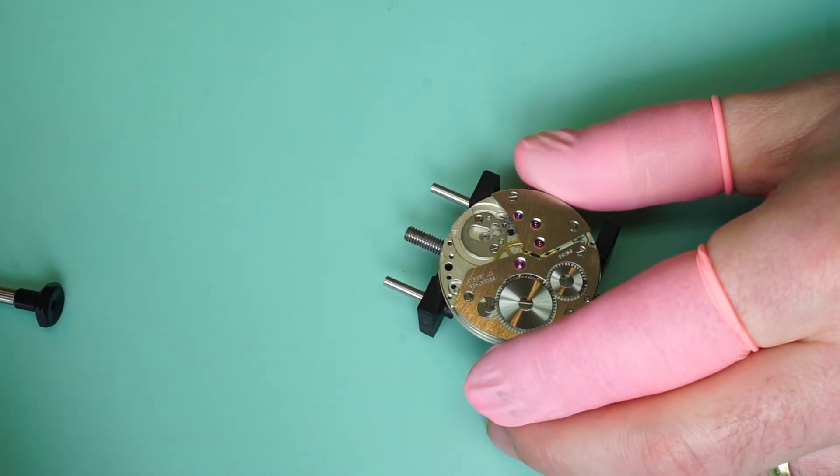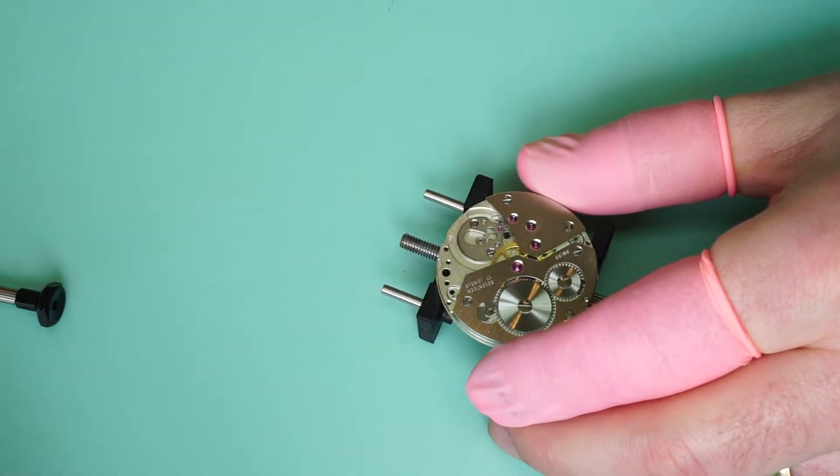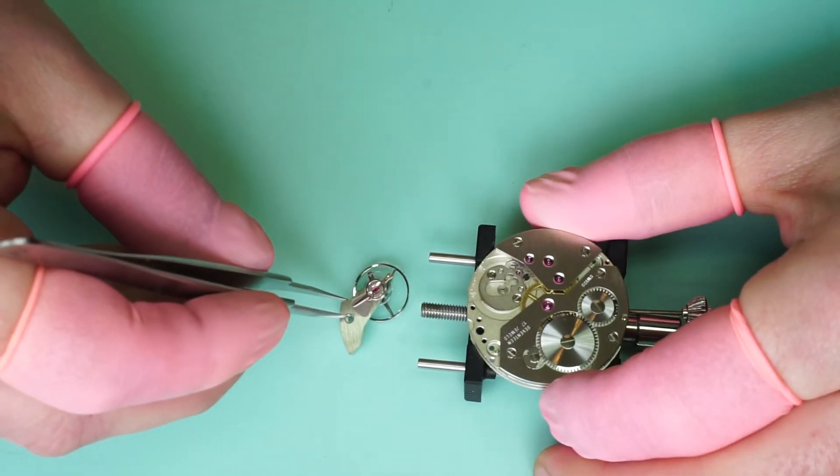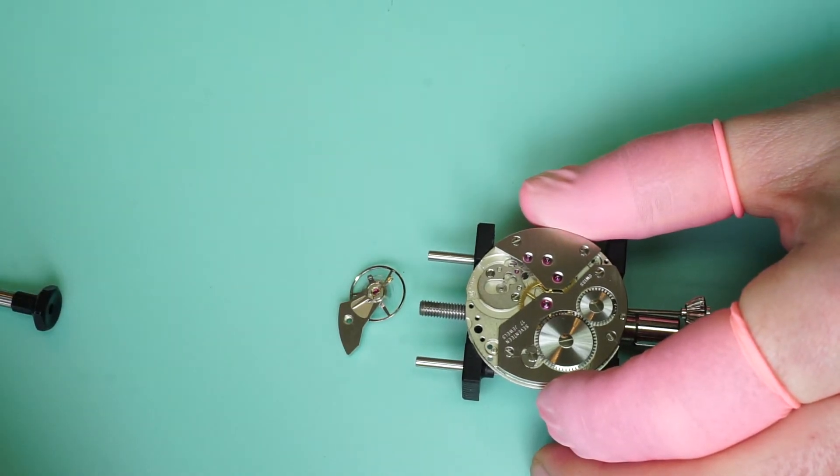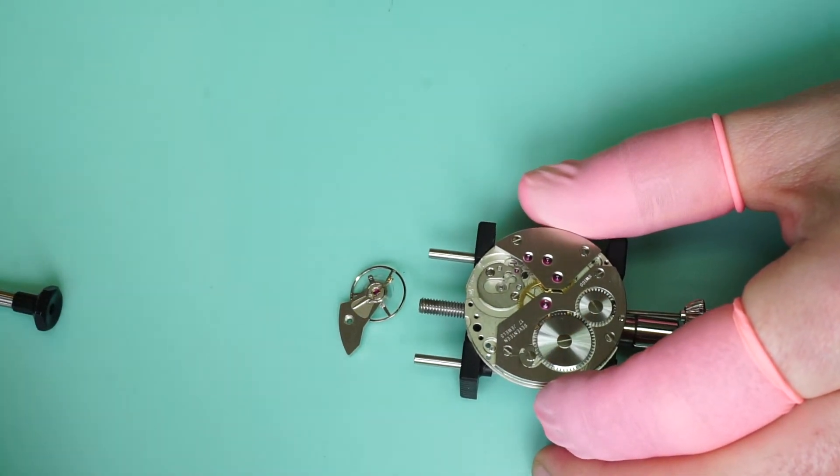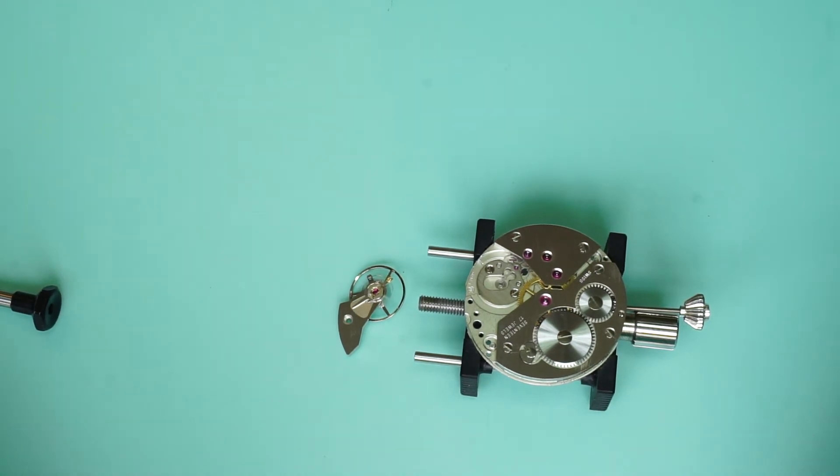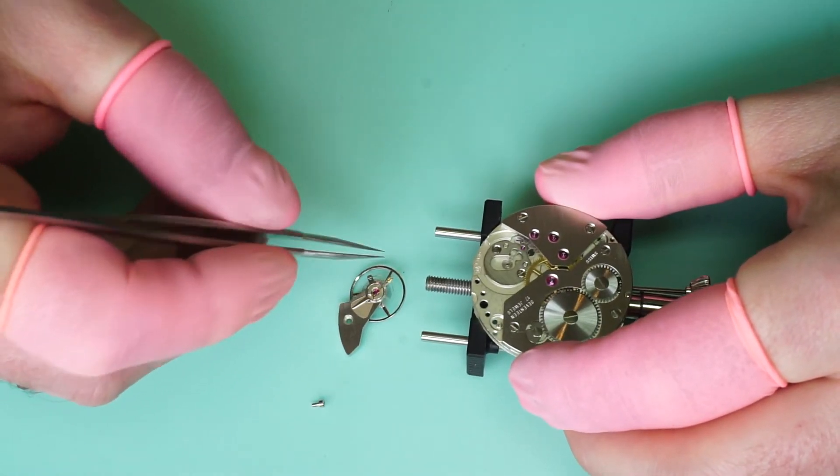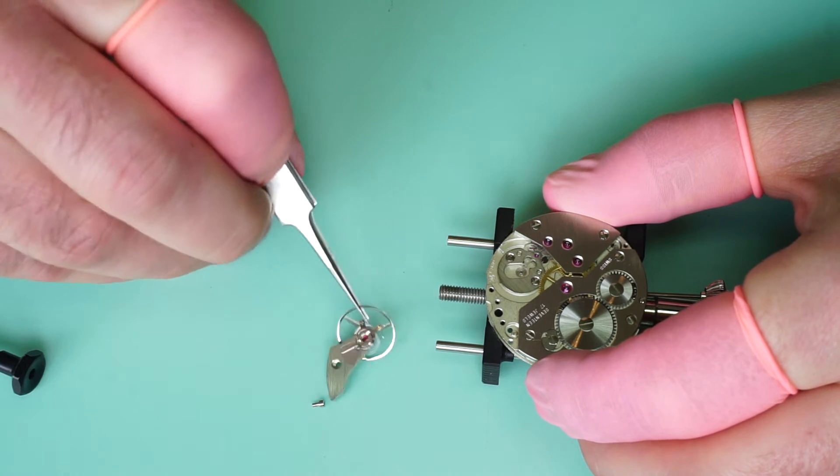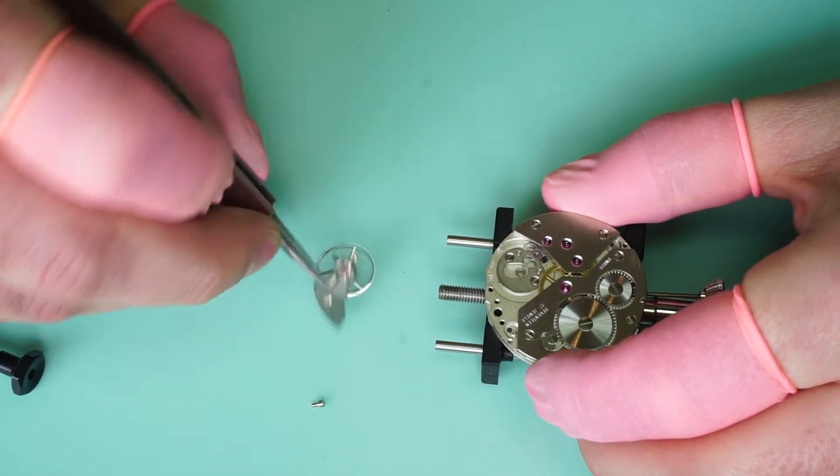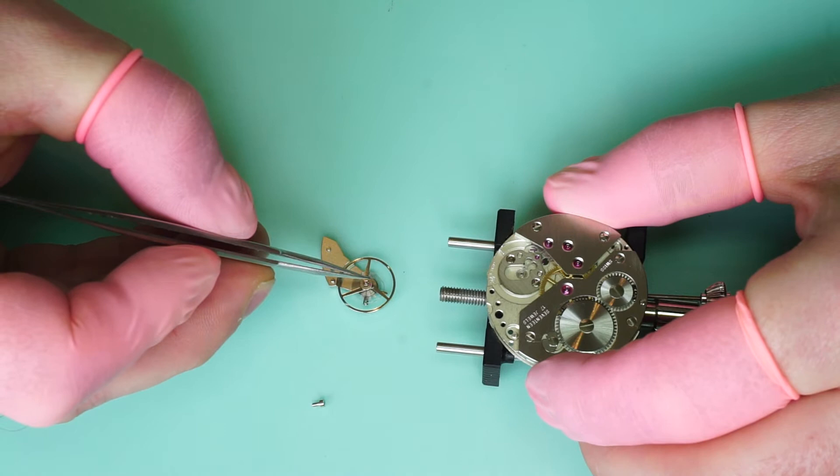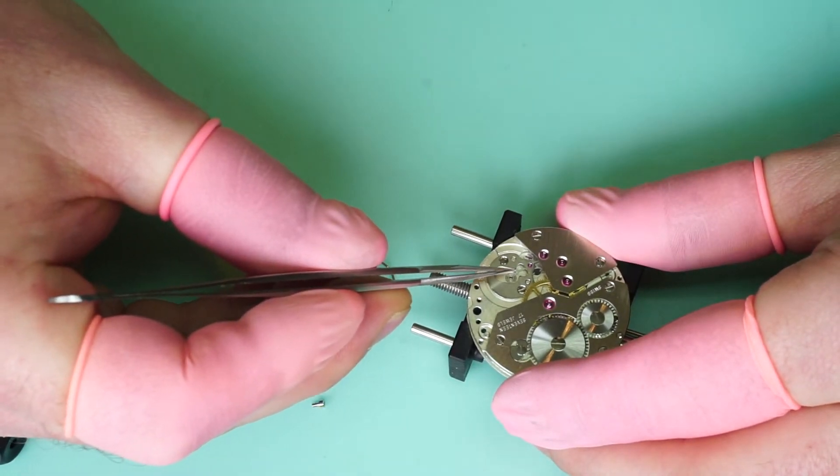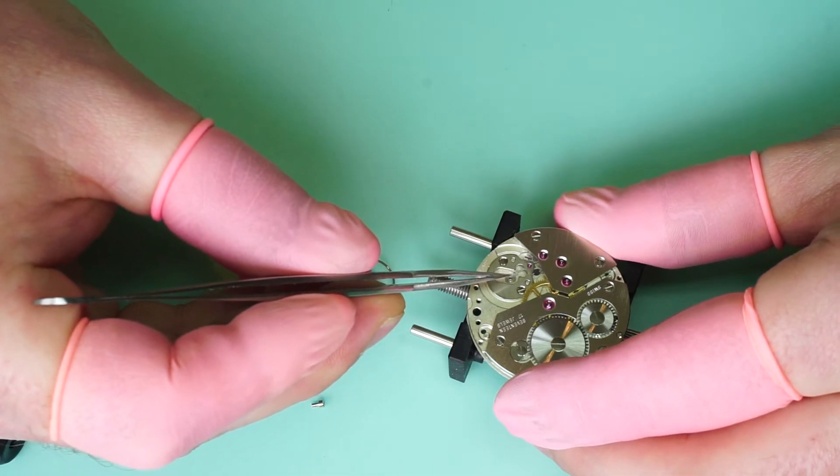And the very last component to be fitted is the balance. If I can get this little cock screw, it's hiding from me. So when you're fitting the balance there's a roller jewel, which I'll try and show you. There's a roller jewel on the underside and you want to align this roller jewel with the center of the fork at the end of the pallets. I'm not sure if you're really going to see that. So we're going to flip the balance over.